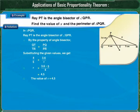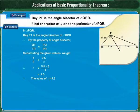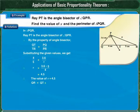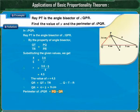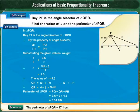Next, we find the perimeter of triangle PQR. The perimeter equals the sum of all three sides. PQ = 3.6 cm. We have found PR = 4.5 cm. For QR, since T lies between Q and R, QR = QT + TR = 4 + 5 = 9 cm. The perimeter of triangle PQR = PQ + QR + PR = 3.6 + 9 + 4.5. Thus, the perimeter of triangle PQR is 17.1 cm.